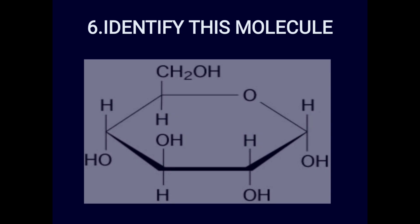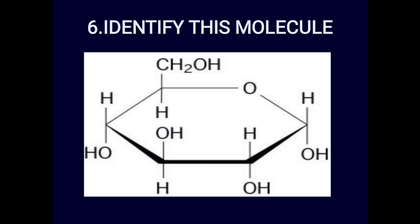Spotter six: identify the molecule. This is the glucose molecule. Its formula is C6H12O6. Glucose can be written as an open chain or closed chain; either way it is C6H12O6.